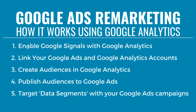So steps one and two: enable Google Signals with Google Analytics, and make sure your Google Ads and Google Analytics accounts are linked. You can just do this with one version of Google Analytics — I'm showing you with both because both will still work. The next thing we need to do is create our audiences within Google Analytics — those are the people that we're actually going to be targeting with our advertisements.